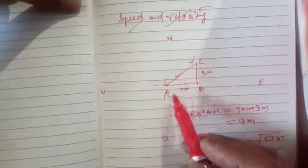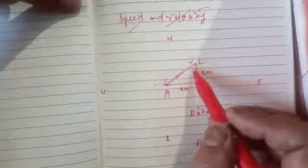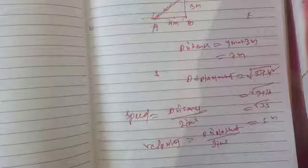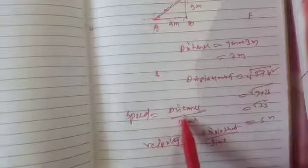Now we discuss about speed and velocity. If we compare distance with time, we get speed. And if we compare displacement with time, it is called velocity. So speed equals distance divided by time, and velocity equals displacement divided by time.